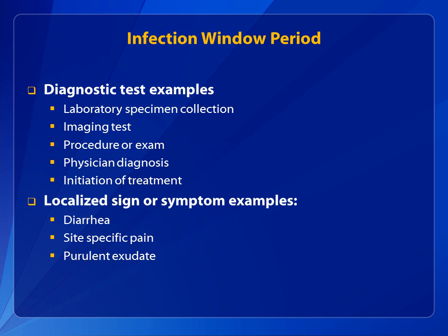The following are considered diagnostic tests for use related to the infection window period: laboratory specimen collection, imaging test, procedure or exam, physician diagnosis, or initiation of treatment. When a diagnostic test is not part of the site-specific criterion, some localized sign or symptom examples may include, but are not limited to, diarrhea, site-specific pain, or purulent exudate.